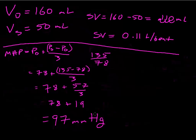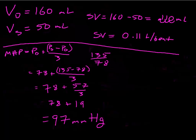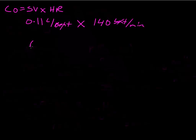Next, calculate cardiac output. Cardiac output equals heart rate times stroke volume. We just calculated stroke volume as 0.11 liters per beat, and the problem statement gave a heart rate of 140 beats per minute. The beats cancel out, and cardiac output equals 0.11 times 140, which is 15.4 liters per minute.